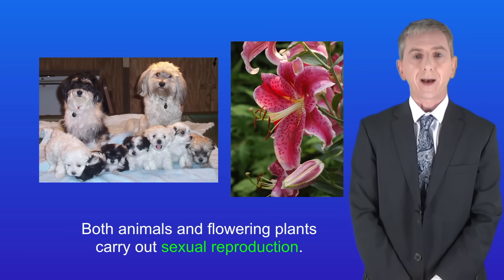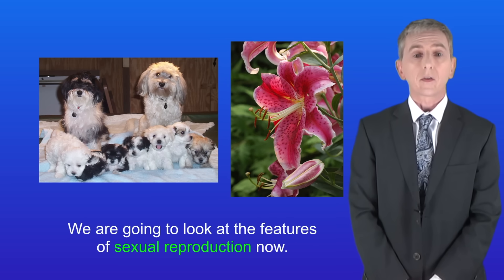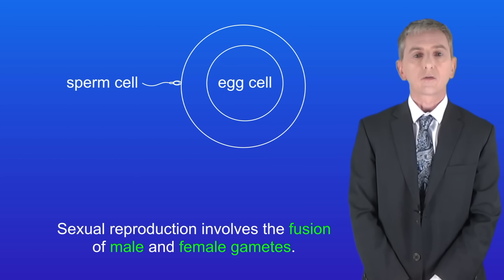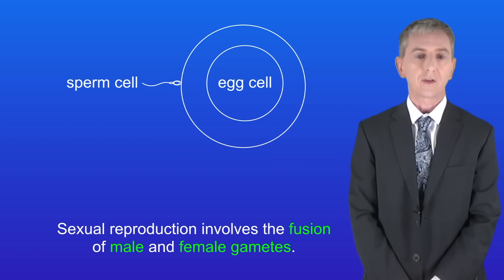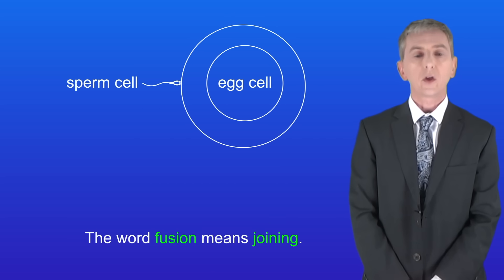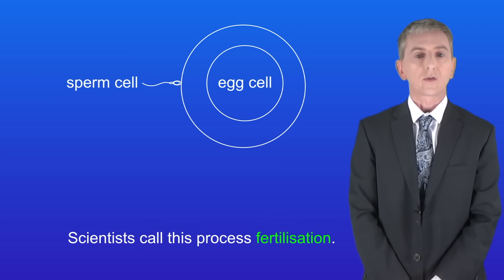Both animals and flowering plants carry out sexual reproduction, so we're going to look at the features of sexual reproduction now. The first key point is that sexual reproduction involves the fusion of male and female gametes — the word fusion means joining. Scientists call this process fertilization.